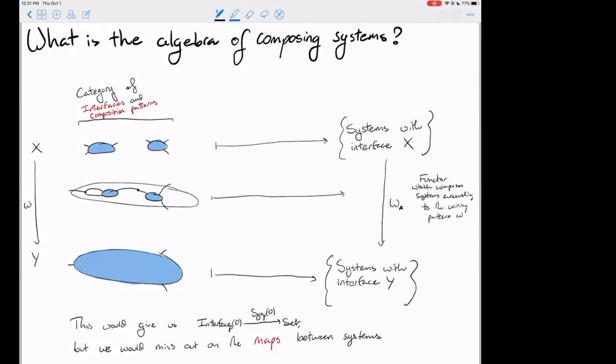We really want maps between systems because maps are great ways of studying objects. Naively we might send each interface to the category of systems with that interface, but the issue is: what if we have two systems with two different interfaces and want maps between them? If we only assign every interface to a category with maps that preserve that interface, there's no way to get maps between two systems with different interfaces. So we need two different kinds of composition: compositions of systems and compositions of maps — for that reason we're going to use double categories.